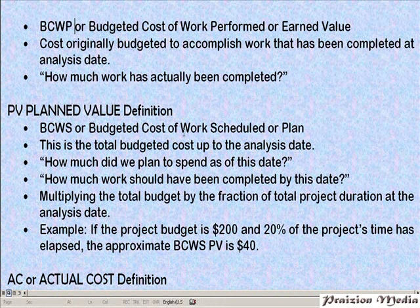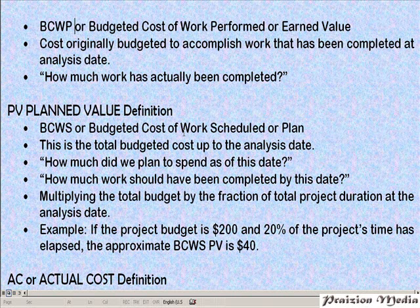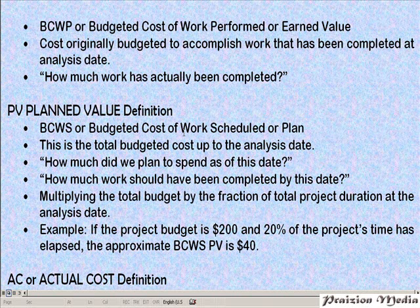What is Planned Value? Planned Value is also known as the budgeted cost of work scheduled. This is the total budgeted cost up to the analysis date. It answers the question: how much did we plan to spend as of this date? How much work should have been completed by this date? In our example, the planned value is actually $20, because at the end of two hours, I had planned that I would have done $20 worth of work. So the planned value in that scenario is how much work should have been completed by this time — $20.